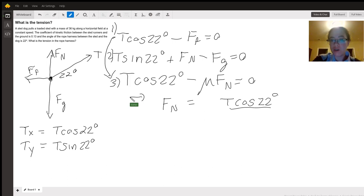Now we can plug this into equation two. If we plug this into equation two, we get T sine 22° plus T cosine 22° over 0.13 minus F_g equals zero.